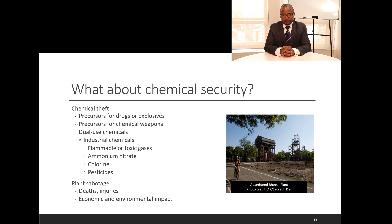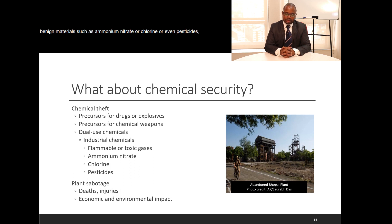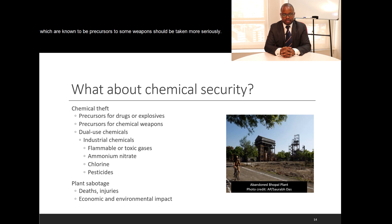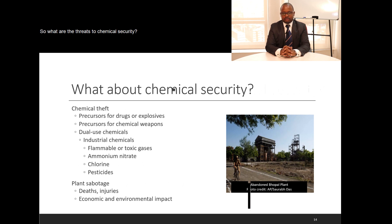Chemicals, in terms of security, can be targeted by people through theft or sabotage. Chemical thefts are well documented, and particularly dual-use chemicals should cause a lot of concern in terms of security. For theft, benign materials such as ammonium nitrate, chlorine, or even pesticides, which are known to be precursors to some weapons, should be taken more seriously. Sabotage is also well known and could be due to economic reasons — an individual may want to sabotage the operation of a given chemical plant. Therefore, chemical security becomes very important in protecting our chemicals and our plants from sabotage.